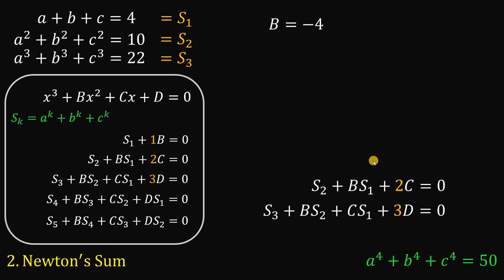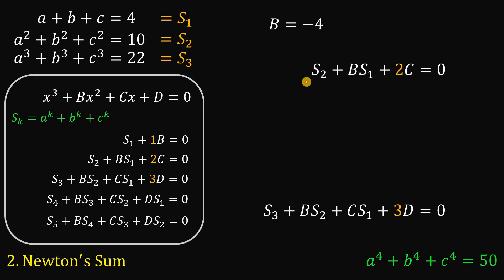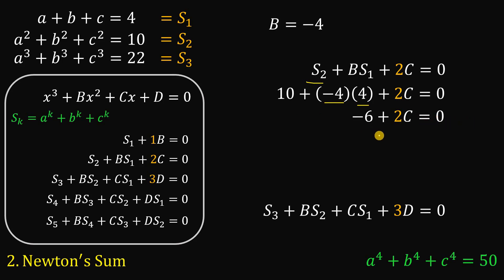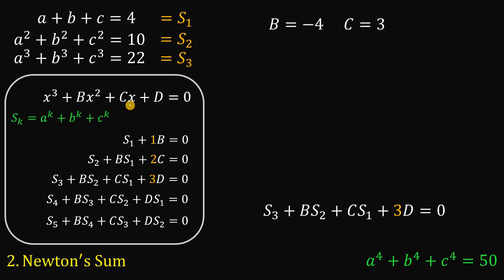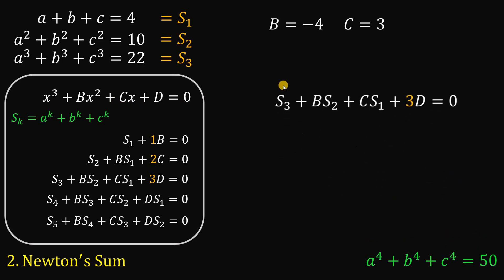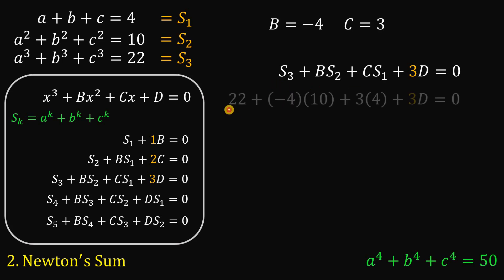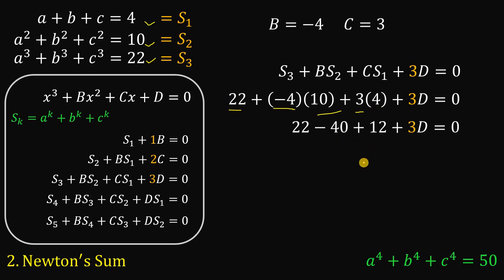To find c, we use the second Newton's Sum equation. Substituting: s₂ is 10, b is negative 4, s₁ is 4, plus 2c equals 0. Simplifying gives negative 6 plus 2c equals 0, so c equals 3. To find d, we use the third equation. Substituting: s₃ is 22, b is negative 4, s₂ is 10, c is 3, s₁ is 4. We get 22 minus 40 plus 12 equals negative 6, then adding 6 and dividing by 3 gives d equals 2.